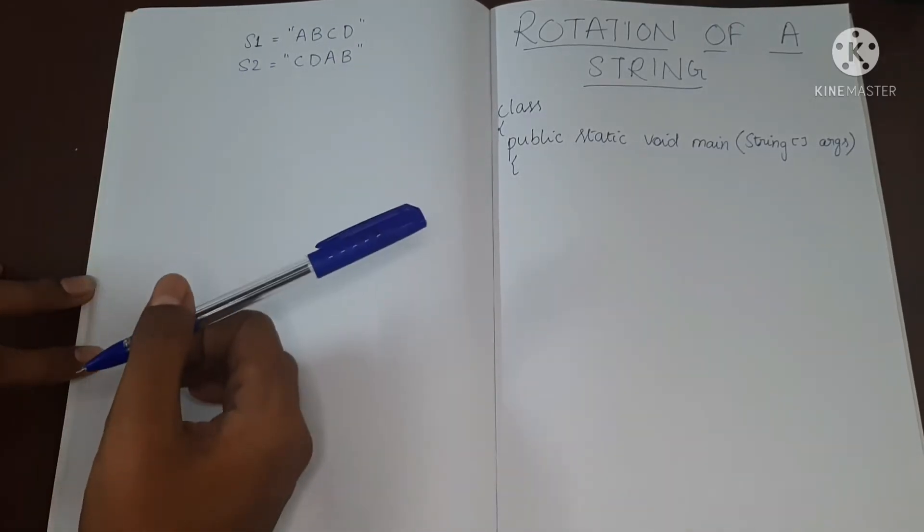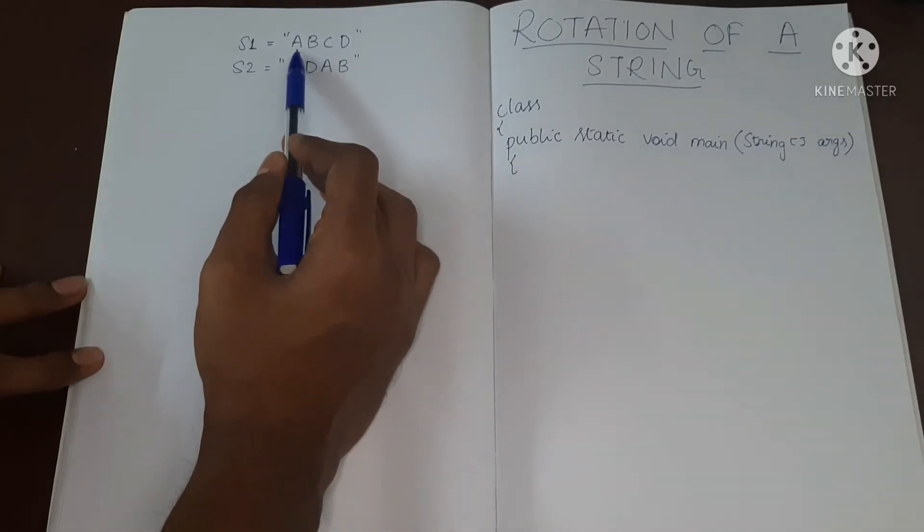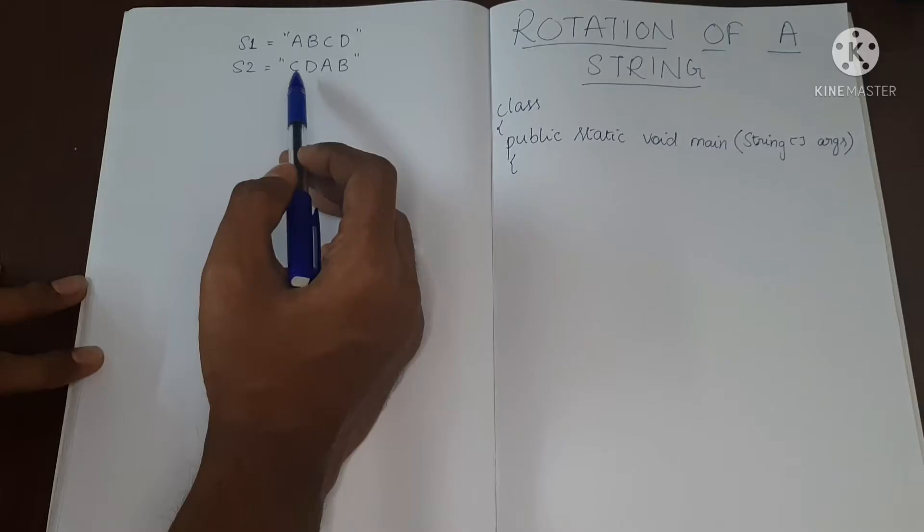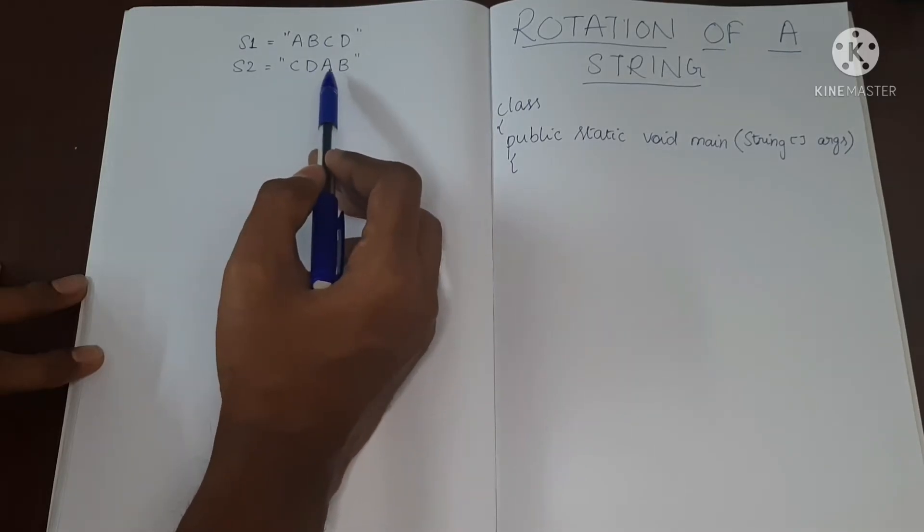So let me explain what rotation means. We have two strings over here: A, B, C, D and C, D, B, A. If you look carefully, the second string is a rotation of the first string.